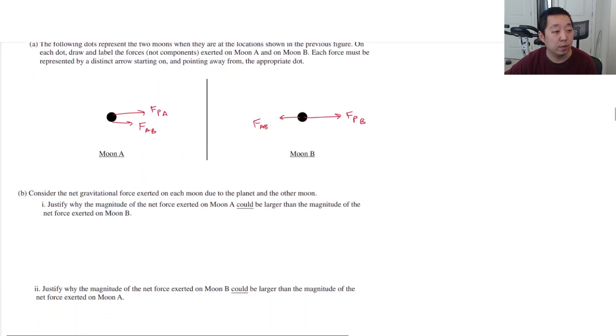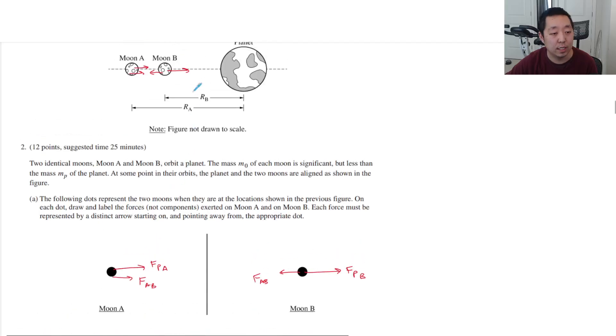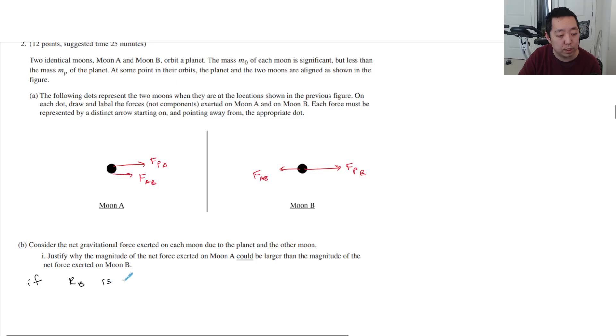Consider the net gravitational force exerted on each moon. Justify that the magnitude of the net force exerted on moon A could be much larger than the magnitude exerted on B. So the net force here is F planet B minus FAB. This thing could be huge compared to these, and that could happen if RB is very small. If RB is much smaller than RA, then the force of pull from the gravity of the planet is very large compared to FAB or FPA. So the net force on B would be bigger.